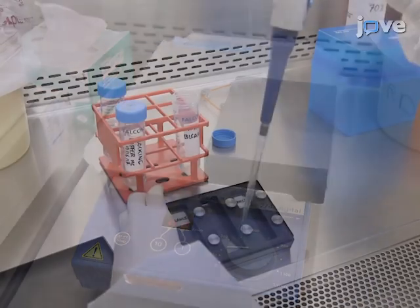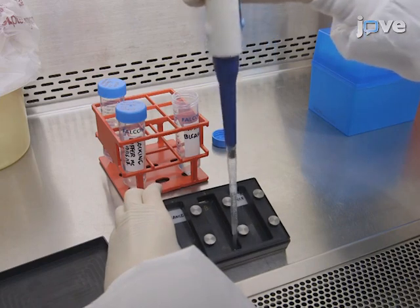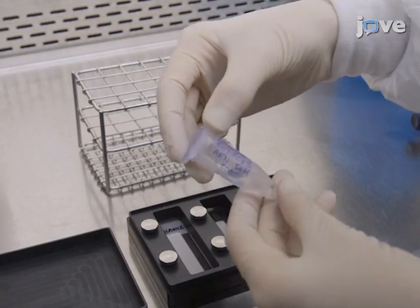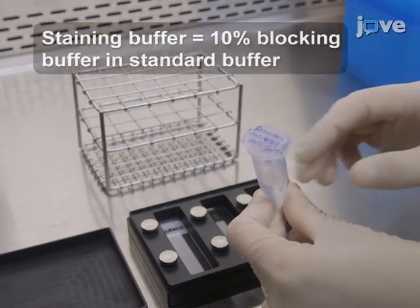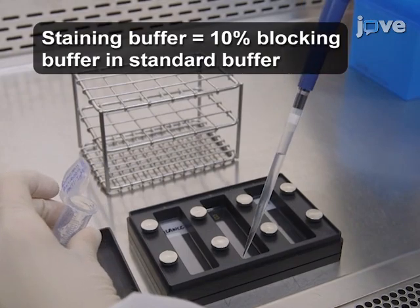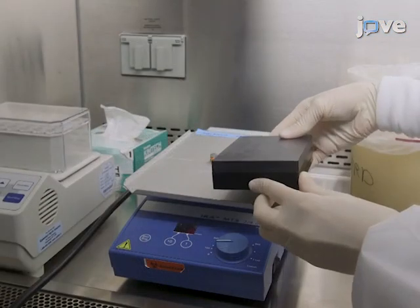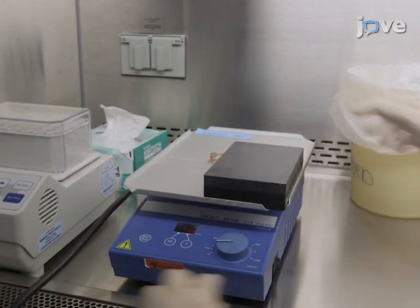Remove the blocking buffer by aspirating from the corner of the microarray chamber with a pipette. Add anti-human IgM fluorochrome conjugated secondary antibody diluted 1 to 5000 in the staining buffer to the microarray. Then incubate the microarray for 30 minutes at room temperature in the dark on an orbital shaker at 140 RPM.